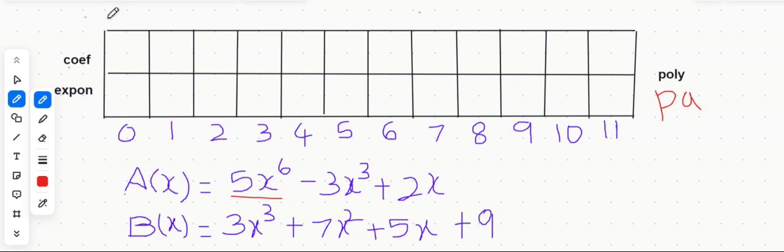First you are going to store A. We are going to start with SA, which indicates the start of A. Look at the first term. We have 5x^6. So 5 is the coefficient and 6 is the exponent, which is going to be stored like this.